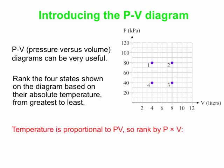You go back to the ideal gas law. We're keeping N and R the same, so ranking by T means PV equals NRT. Ranking by temperature is the same as ranking by the product of P times V. In this case, state two has the largest value of P times V, 80 kilopascals times 8 liters.